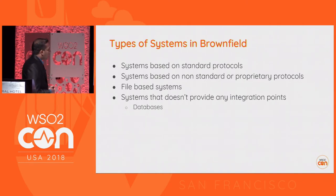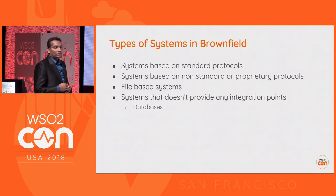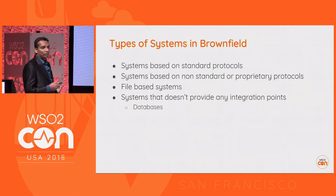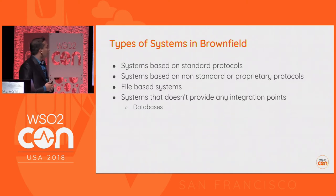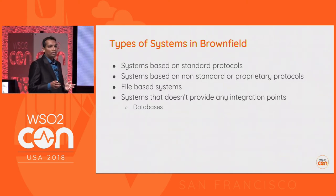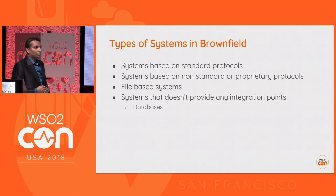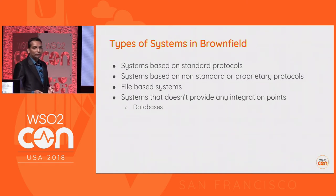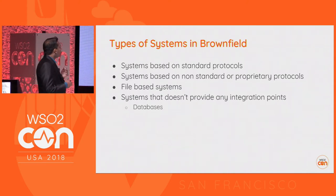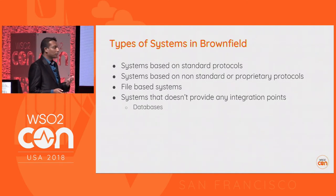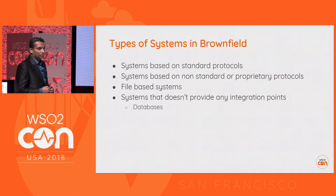Most legacy systems use files as a transferring medium to do integrations, so integration with those systems has to happen using files — that's the third type. The last type is systems which do not provide any kind of integration points. However, some stateful systems use databases to store data, so we might get a chance to integrate directly with those databases. Those are the types of systems we have in the brownfield.